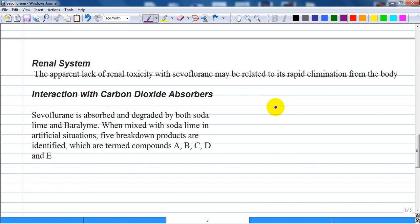Interaction with carbon dioxide absorbents: sevoflurane is absorbed as it is used in a cycling circuit and it is absorbed and degraded by soda lime or baralyme. When mixed with soda lime in artificial situations, five breakdown products are produced and identified which are termed compounds A, B, C, D and E.